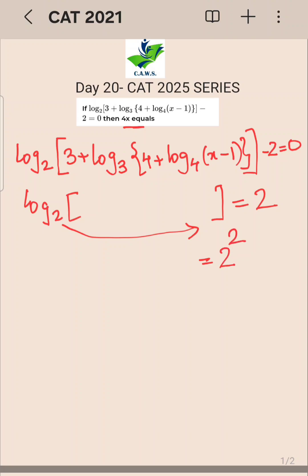The left hand part will be 3 plus log to the base 3 of the remaining part, so this becomes 4. This 3 will go on the other side, will become 4 minus 3 which is 1.